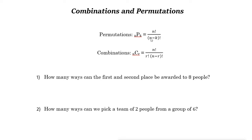So permutation means the number of ways to choose a sample of k elements from a set of n distinct objects where order is important and replacements are not allowed. Combination, on the other hand, is the number of ways to choose a sample of k elements from a set of n distinct objects where order does not matter and replacements are not allowed. For a combination problem, we use this formula.